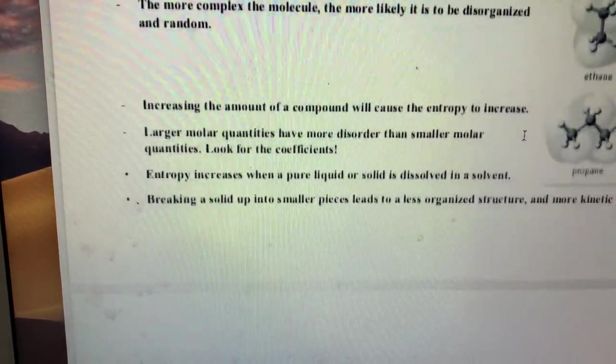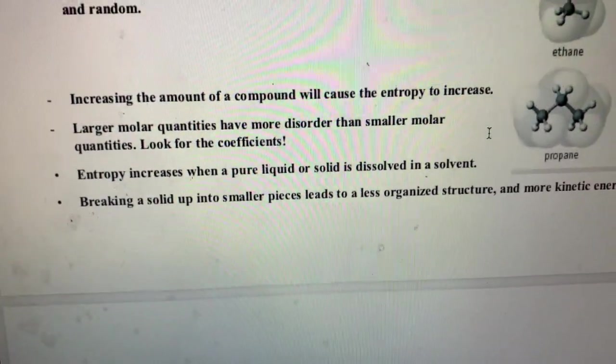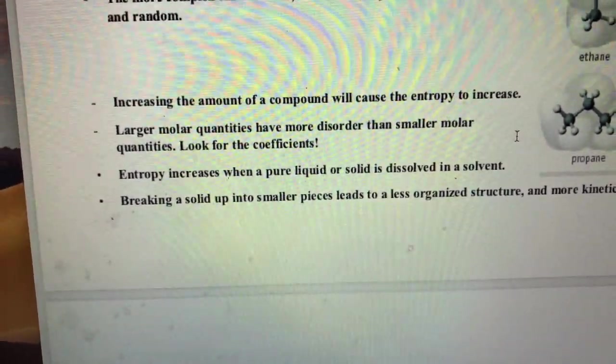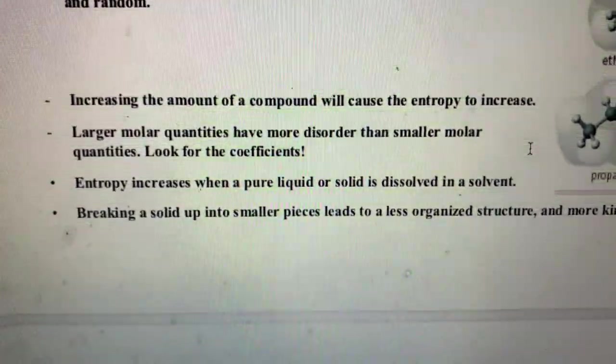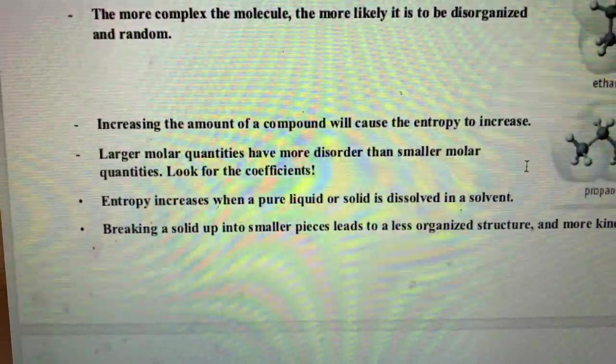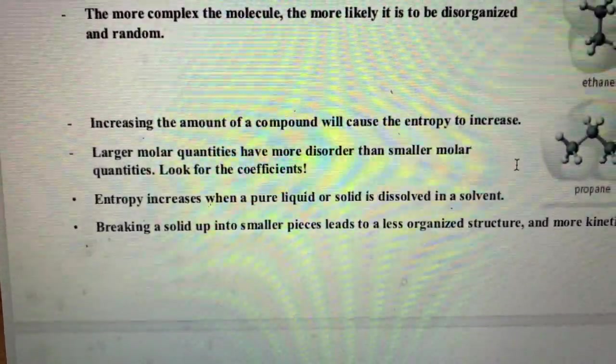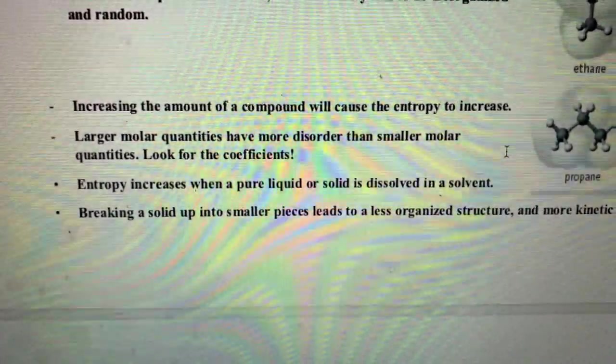If you have more of a particular sample, well if you have more of something there's more chance of those particles being in random places and having more disorder to them. So if I have five grams of hydrogen gas compared to 10 grams of hydrogen gas, that 10 grams is going to have more entropy, it's going to be more disordered.